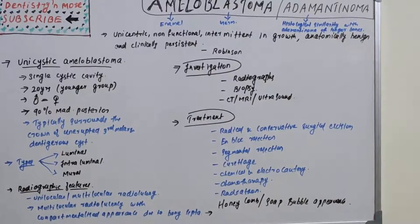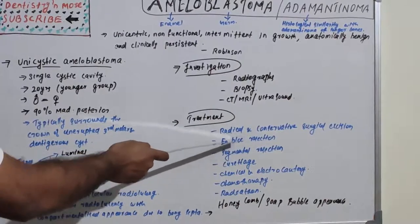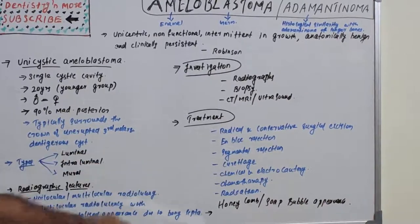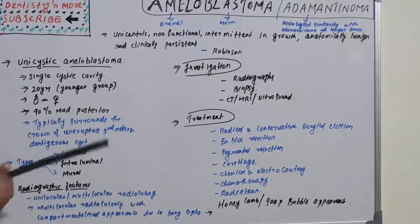Segmental resection: removal of a segment of maxilla or mandible, which may include hemimaxillectomy or hemimandibulectomy. This is the most commonly used treatment due to a lower chance of recurrence. Notably, lesions over 5 centimeters are most likely to recur even after segmental resection.